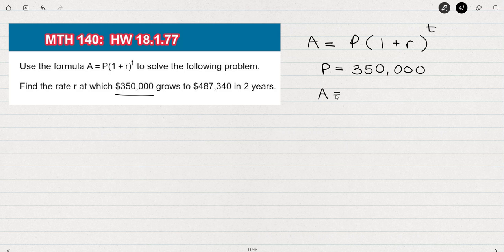A is the amount that's in the account when we're done, so after two years. So we're told that this $350,000 grows to $487,340. So we know that A, or the amount, is $487,340.